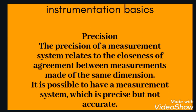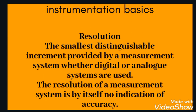Precision: the precision of a measurement system relates to the closeness of agreement between measurements made of the same dimension. It is possible to have a measuring system which is precise but not accurate. Resolution: the smallest distinguishable increment provided by an instrument. Whether digital or analog systems are used, the resolution of a measurement system is by itself no indication of accuracy.